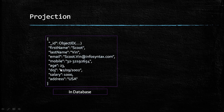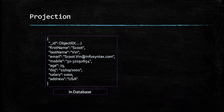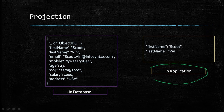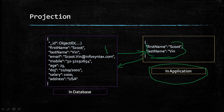Here we can see the data present in our database - fields like ID, first name, last name, email, age, date of joining, salary, and address. As per our requirement, we need to get only first name and last name from the database. For that case we will use the projection parameter. Our application expects only these two columns, but the data in the database collection will not be impacted. We use projection to specify which fields are required or not required.